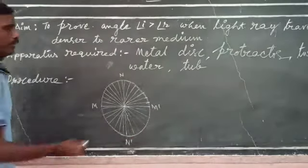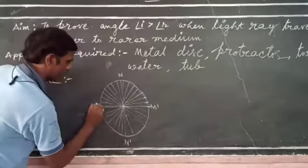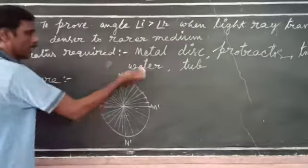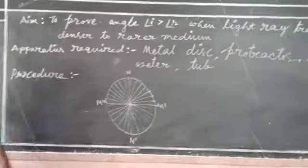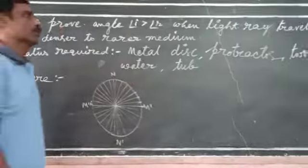That way, from 0 to 180 degrees, we have to mark on either side of the metal disc.